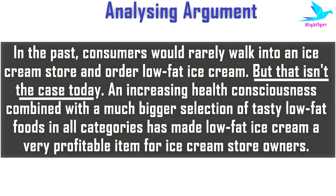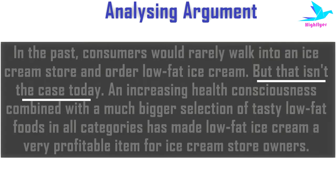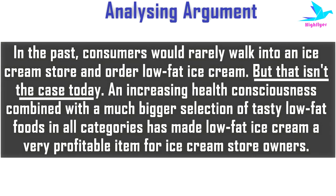For example, imagine a teacher giving feedback about a student to his parent. He might say: he is good at studies, he scores good numbers, he is good at sports, but he lacks discipline. The teacher is pointing out positive things, but the tone makes clear that the key point — the one he wants to highlight — is 'but he is not disciplined.' Any sensible parent would pick out this point rather than getting influenced by the positive notes. This is exactly what we need to do while analyzing an argument: find the exact cause or emphasis of the argument.